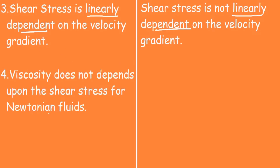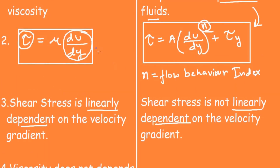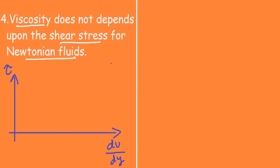The fourth point: for Newtonian fluids, viscosity does not depend upon the shear stress. To explain this, if we plot a graph of tau (shear stress) on the y-axis and du/dy (velocity gradient) on the x-axis, according to Newton's law of viscosity we get a straight line passing through the origin.